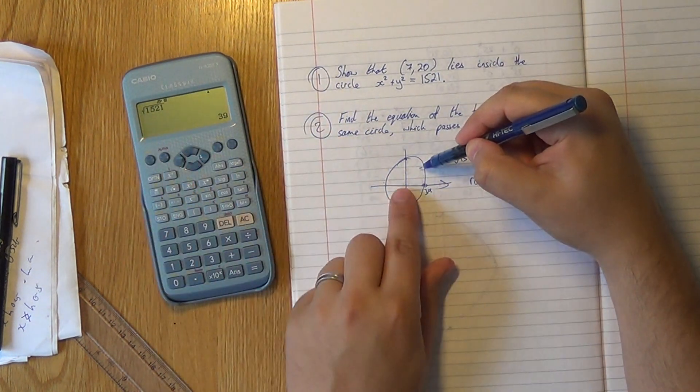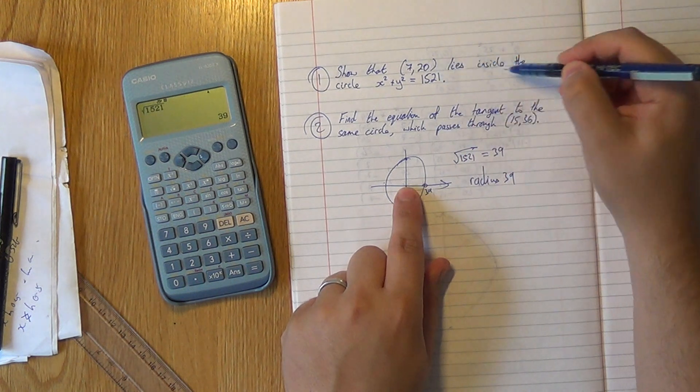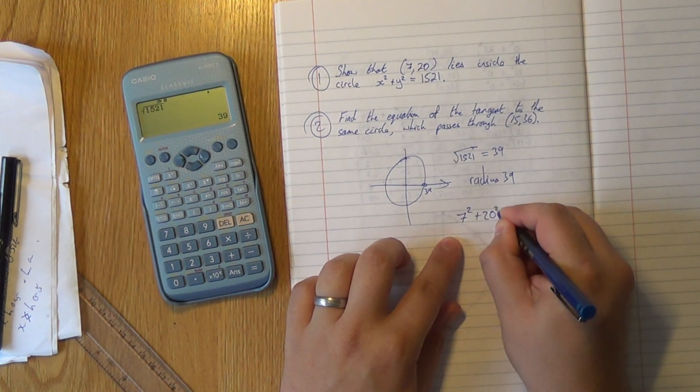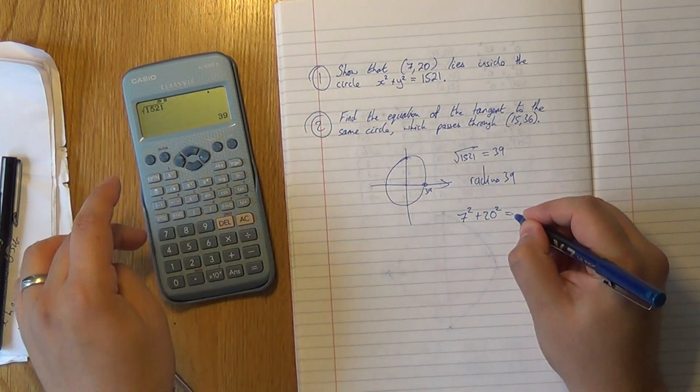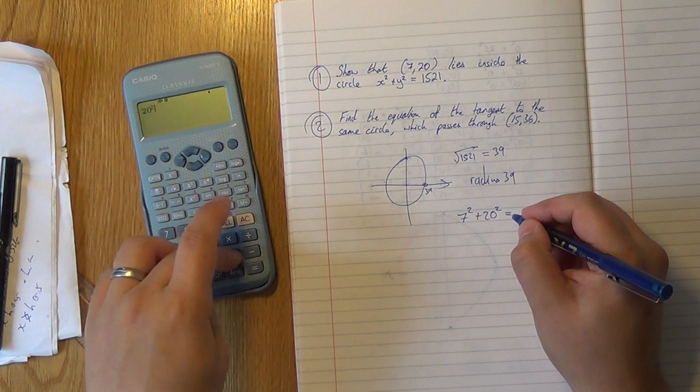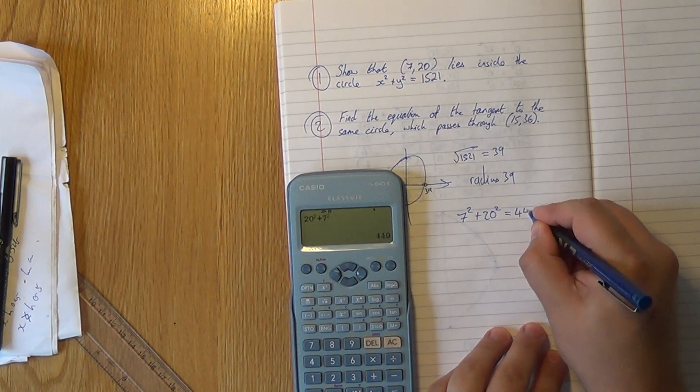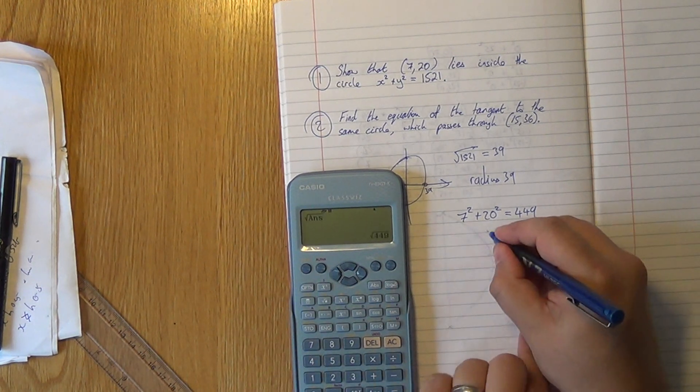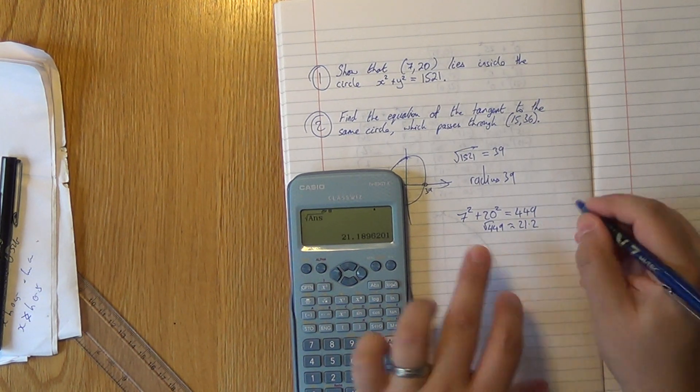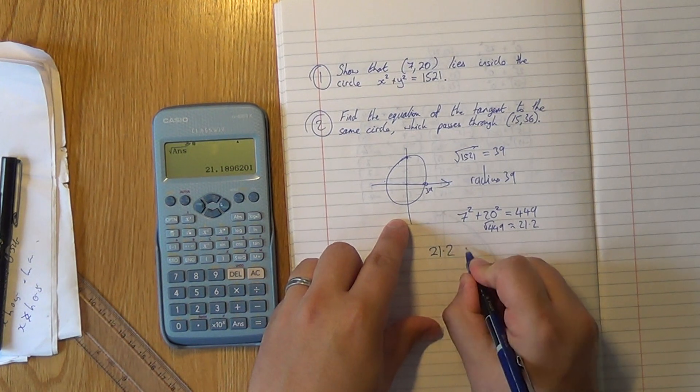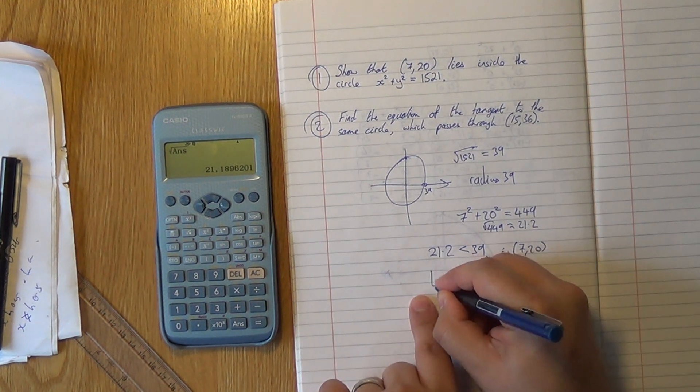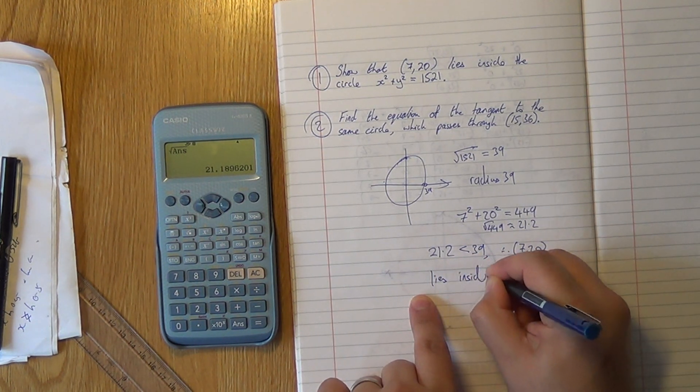So if this point lies inside the circle, it'll be less than 39 units from the center. And if it lies outside, it'll be more. So let's see how far away it is. 7 squared and 20 squared is 449. So 7 squared and 20 squared is 449, and if we square root that, that is roughly 21.2 units from the circle. So 21.2 is less than 39. Therefore, (7,20) lies inside the circle.